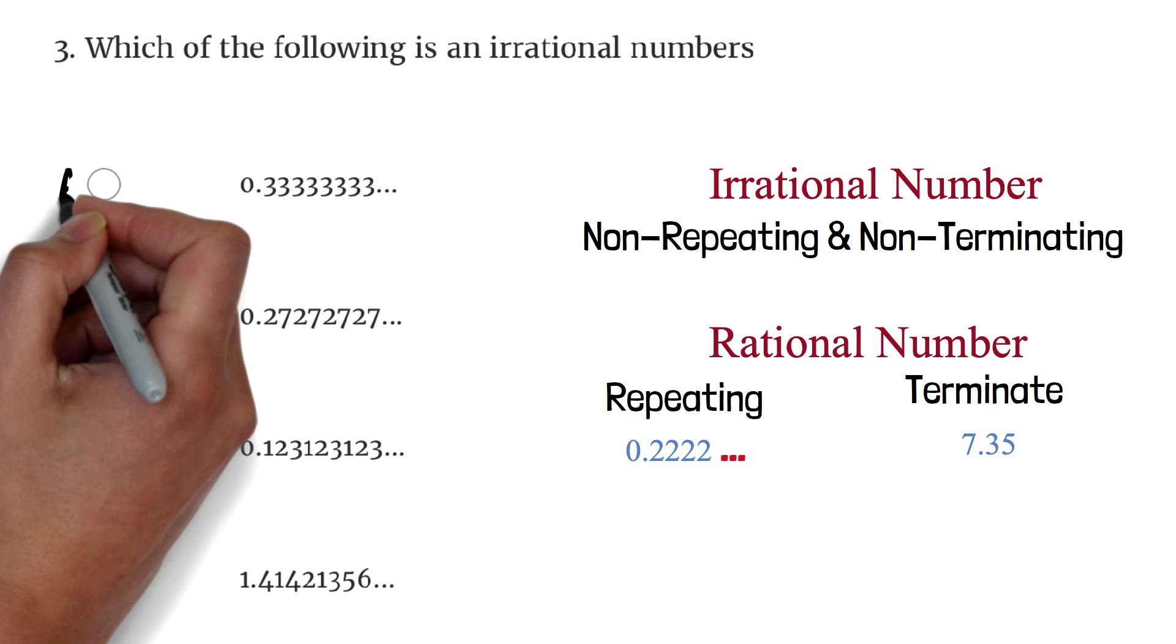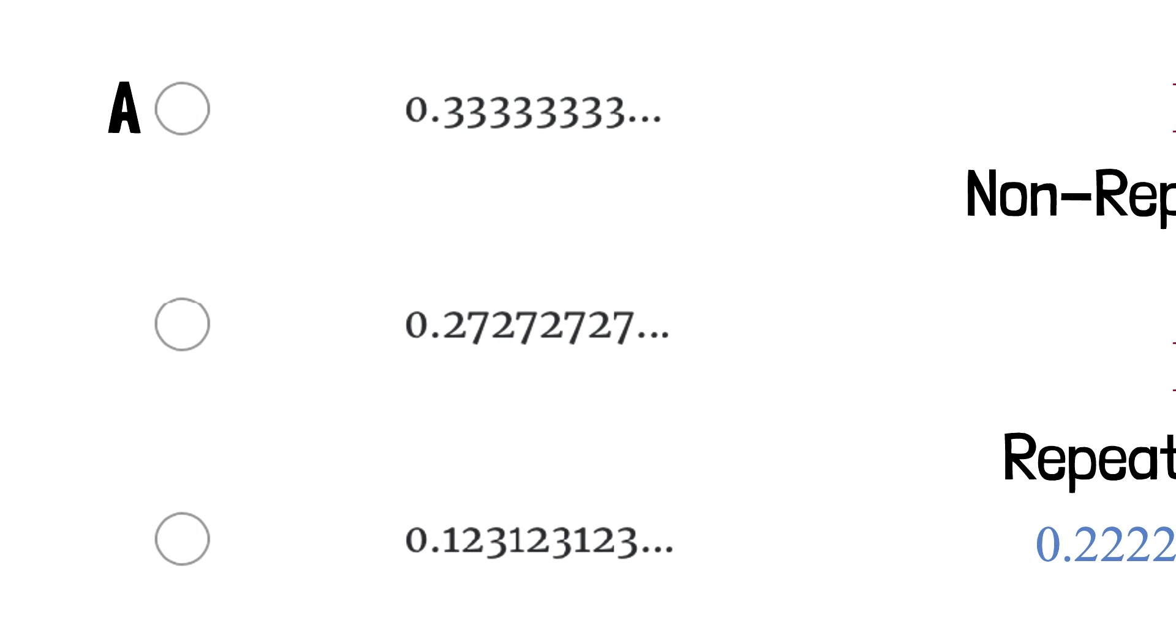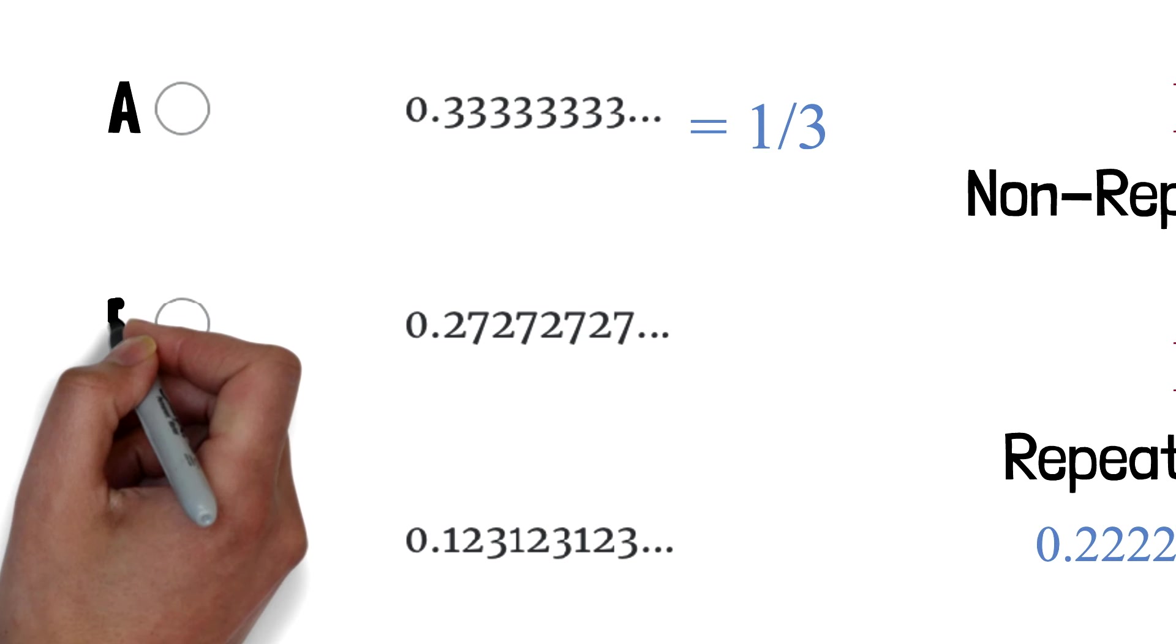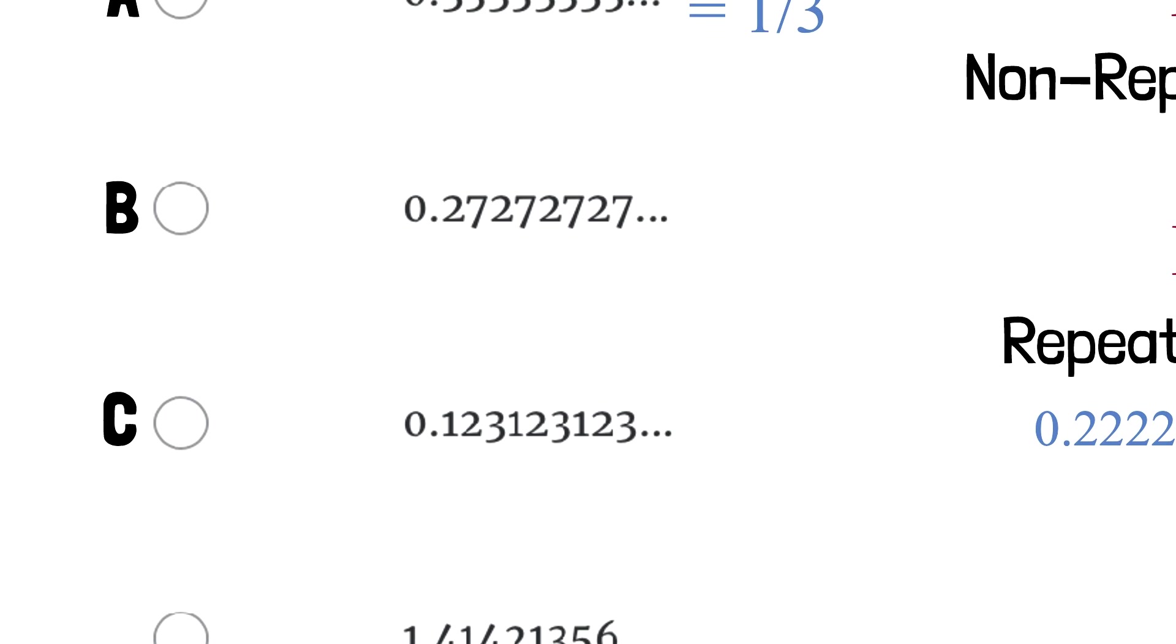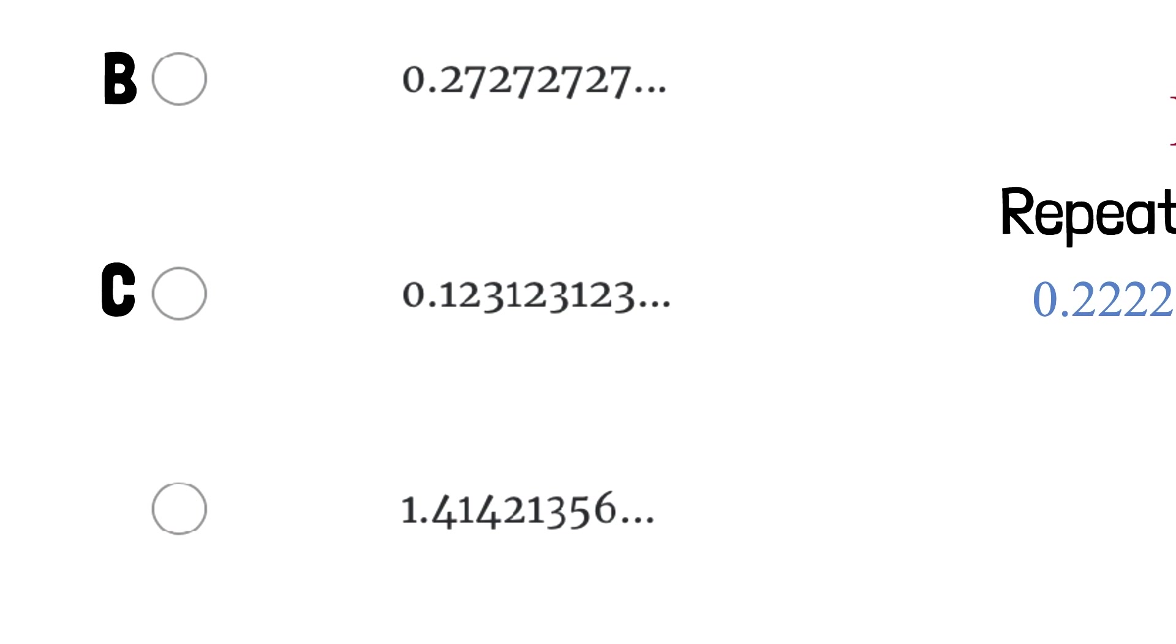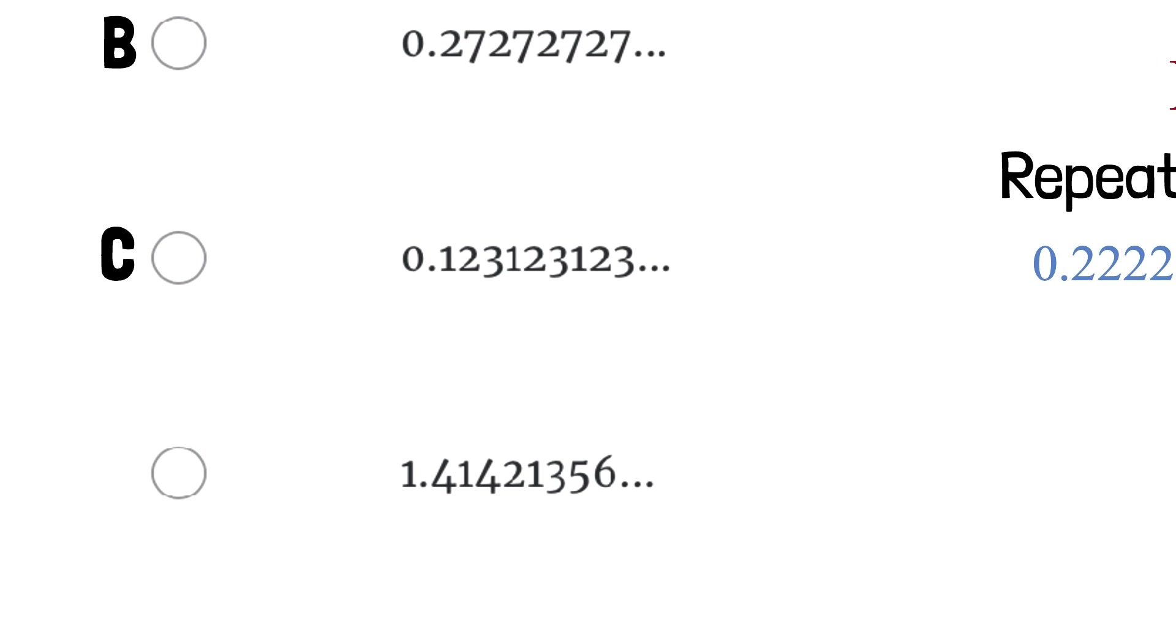So for multiple choice A, we can see that the 3 is repeating, so it is a rational number. This decimal is actually the same as 1 over 3. You can check it out on your calculator. 1 divided by 3. For choice B, also, we can see that we have 2, 7, 2, 7, 2, 7. The 2, 7 is repeating, so it is a rational number. Same here. This one has 1, 2, 3, 1, 2, 3, and 1, 2, 3. The 1, 2, 3 is repeating, so it is a rational number.